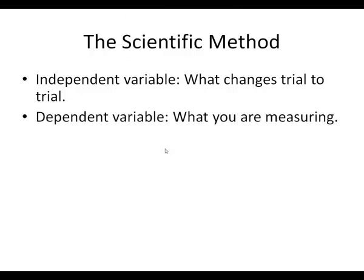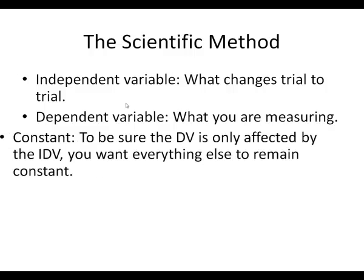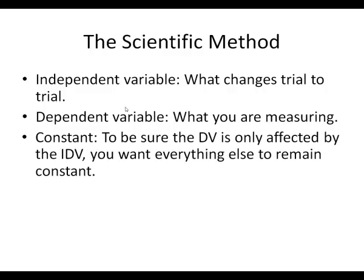The dependent variable is usually what we're trying to figure out, what we're trying to measure as part of our experiment. Next up is a constant — we want to make sure that the dependent variable is only being affected by the independent variable.